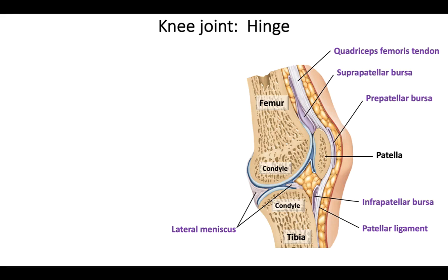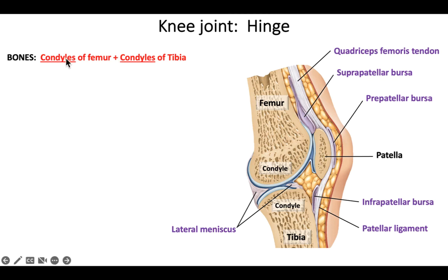Probably the most important joint in the body is the knee joint — it's the most injured joint, especially in athletics. There's a lot of weight going through the knees, leading to damage over time and frequent sports injuries. The knee is probably the most complicated joint in the body. It is a hinge joint formed between the condyles of the femur — both the medial and lateral condyles — and the condyles of the tibia, which also has medial and lateral condyles.